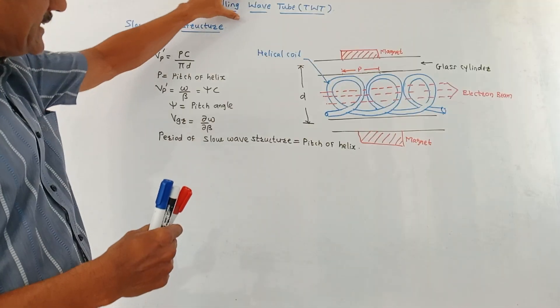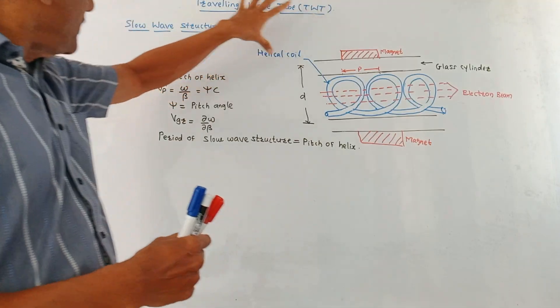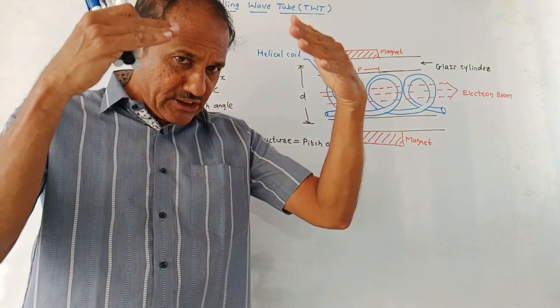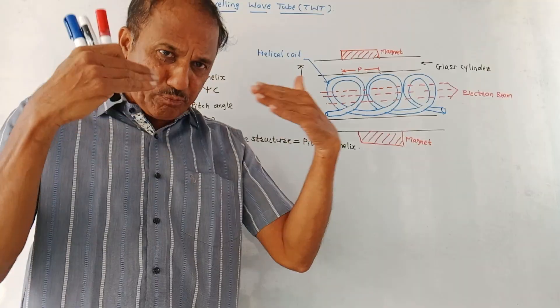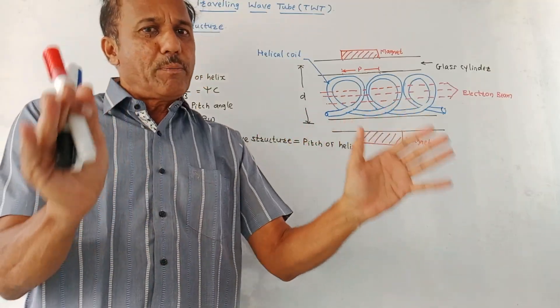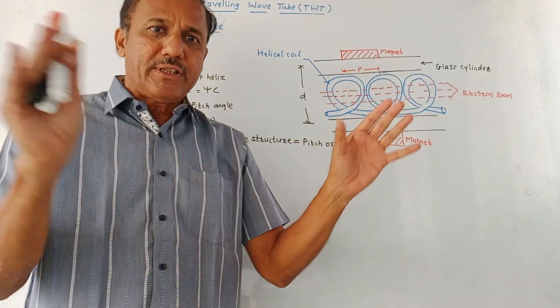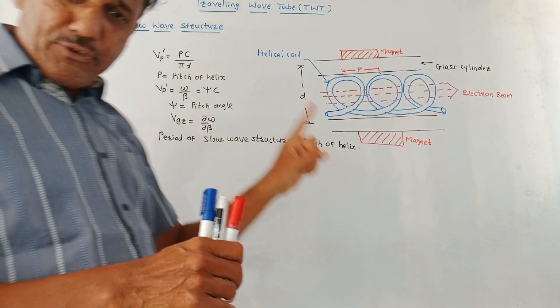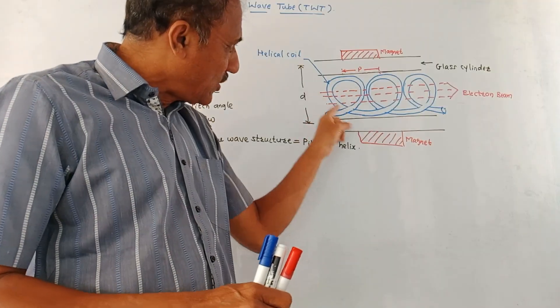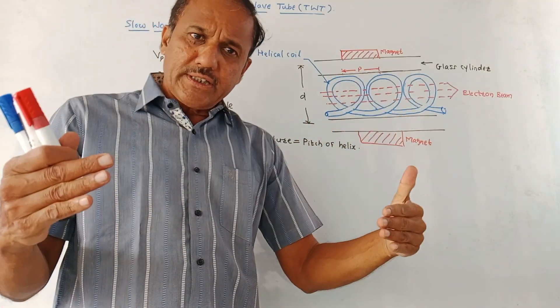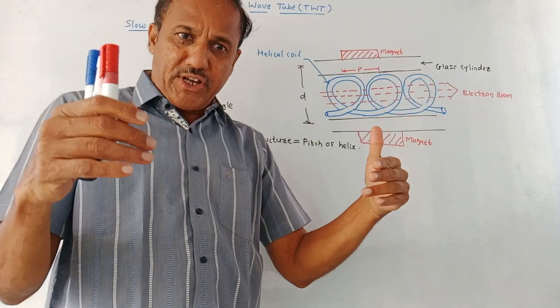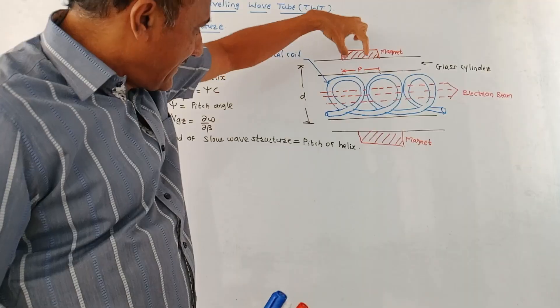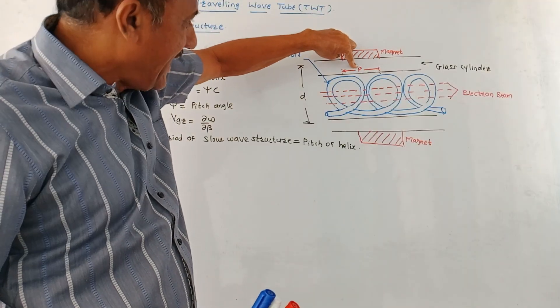Before discussing the construction and working of traveling wave tube, first we'll discuss what is a slow wave structure. As the name indicates, this is the structure which is used to reduce down the speed so that there will be proper interaction between the two fields. One of the slow wave structures is a helical coil like this. The slow wave structure can be in the form of zigzag fashion, but presently we are using a helical coil. This distance is called pitch of the helix.